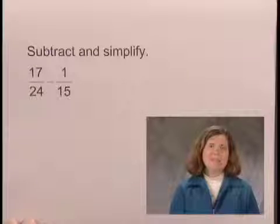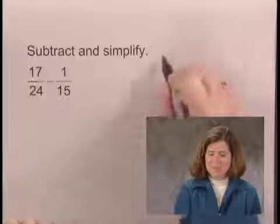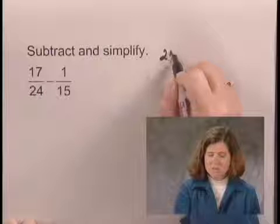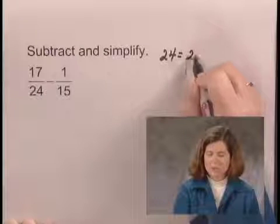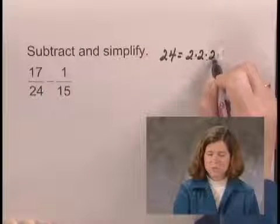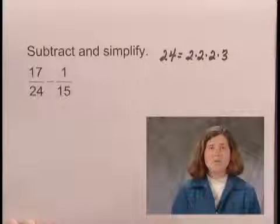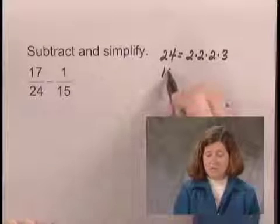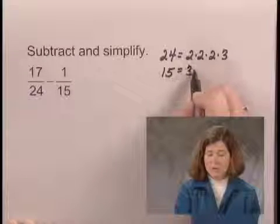We will, in this case, use prime factorizations, so I'll find the prime factorization of 24, which is 2 times 2 times 2 times 3. The prime factorization of 15 is 3 times 5.